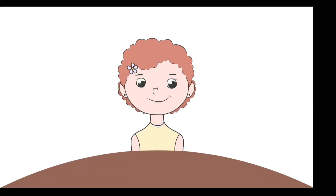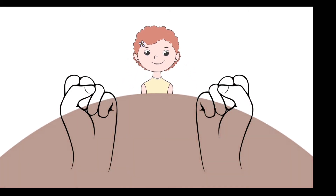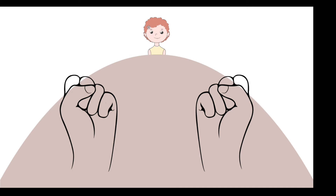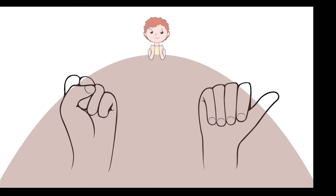Face your child and say, now let's count by fours. Put up both of your hands like balls with the backs of your hands facing outward and have your child mirror you. Remember to start with your thumb on the right, which means they are starting with their thumb on their left. Say the numbers loud and clear as you work your way up.